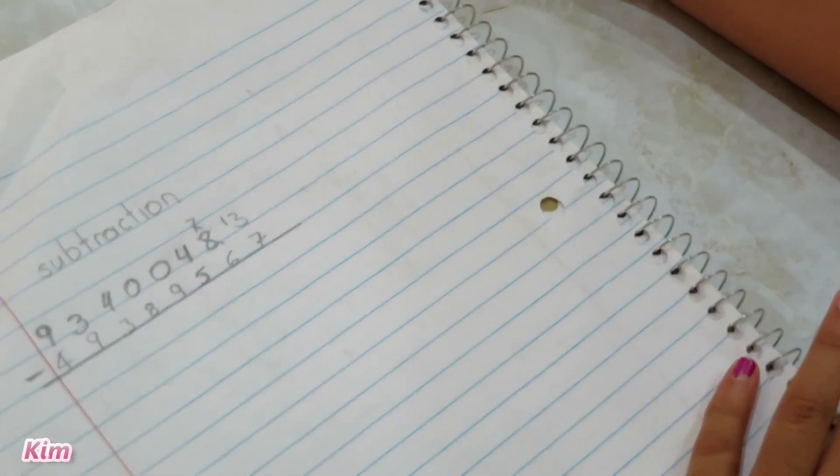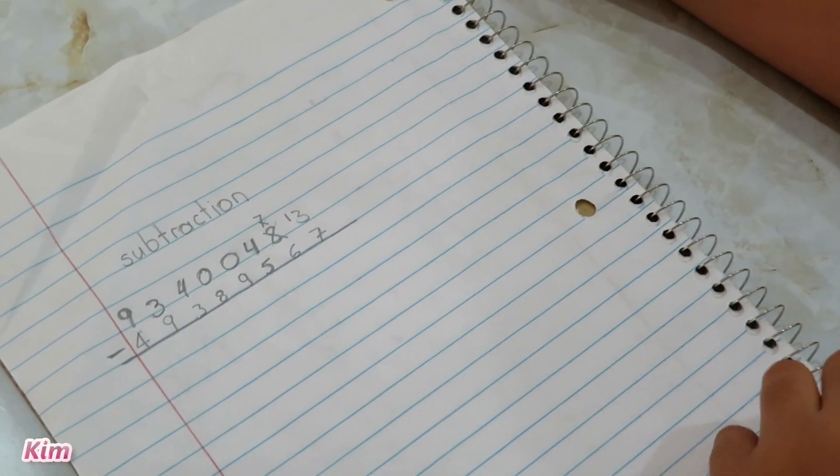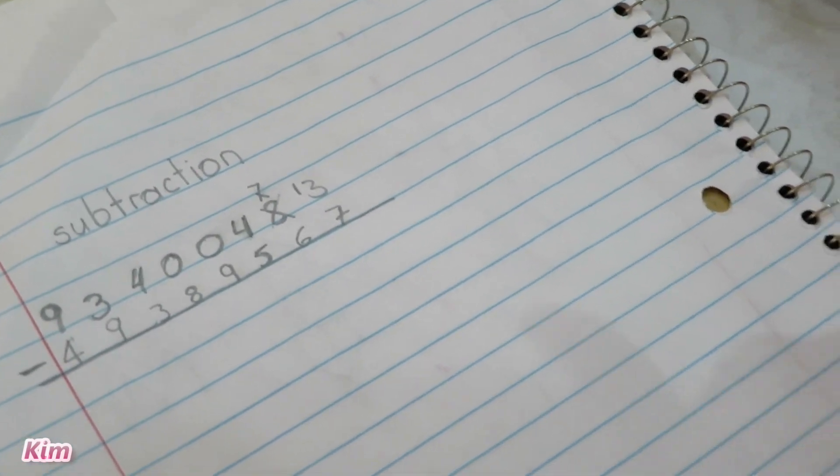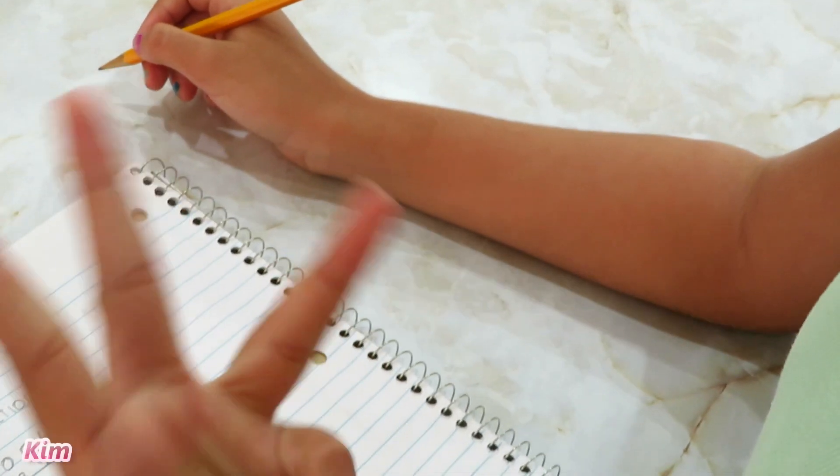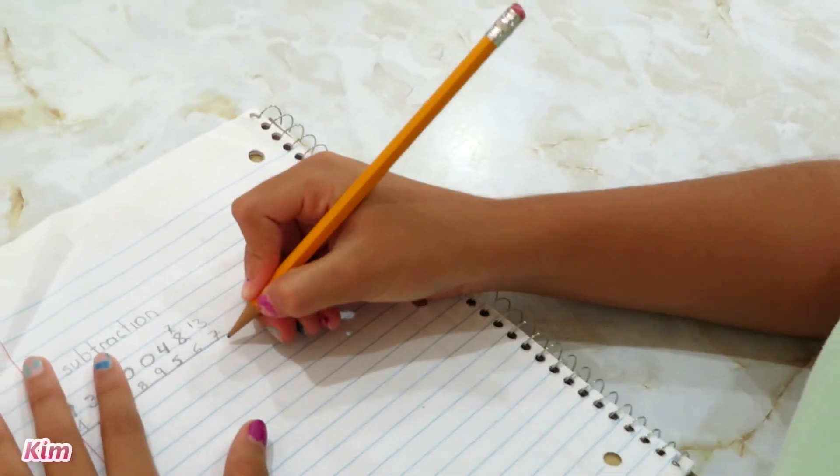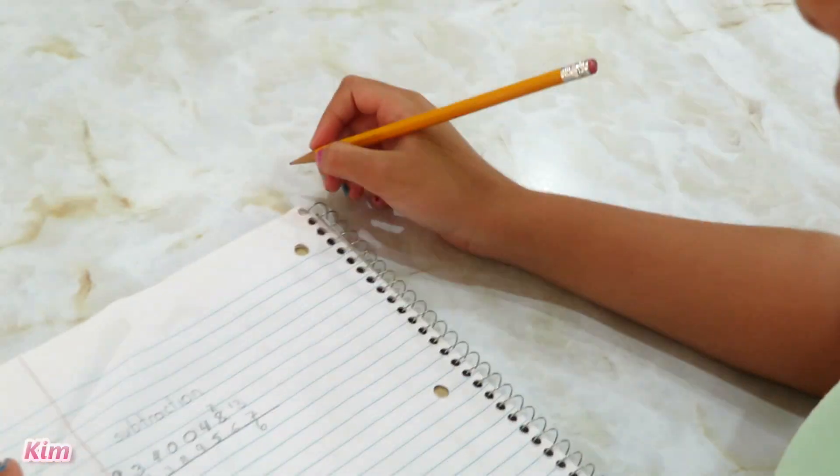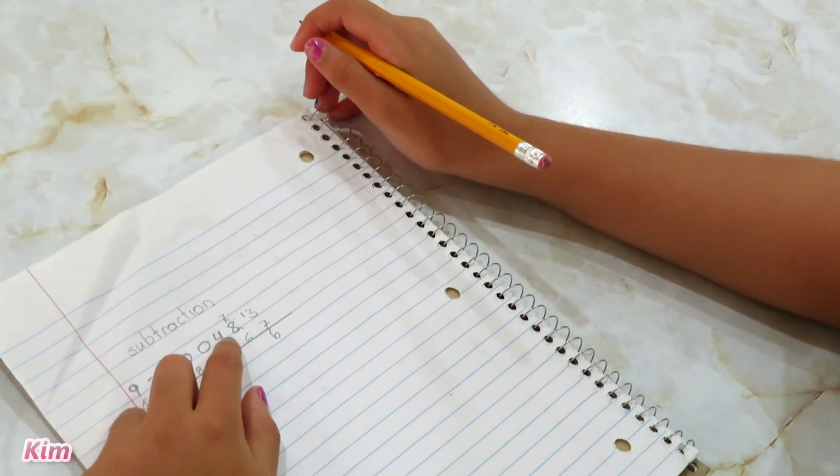So now we have 13 minus 7. 13, 12, 11, 10, 9, 8, 7, 6. The answer is 6.